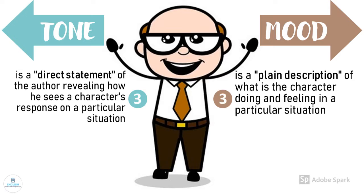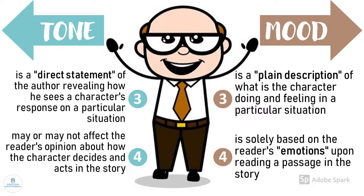Tone is a direct statement of the author, revealing how he sees a character's response in a particular situation. On the other hand, mood is a plain description of what the character is doing and feeling in a particular situation. Lastly, tone may or may not affect the reader's opinion about how the character decides and acts in the story, while mood is solely based on the reader's emotions upon reading a passage in the story.